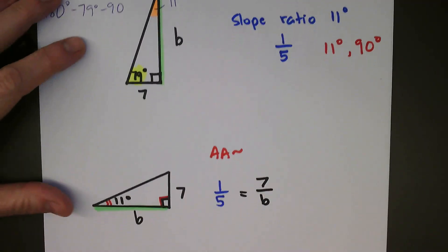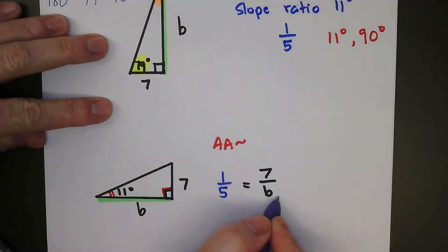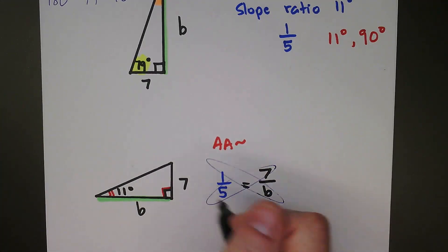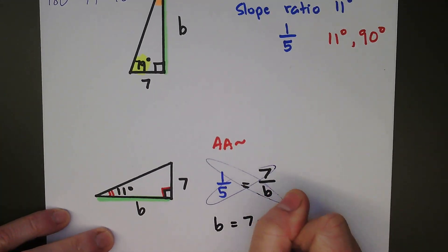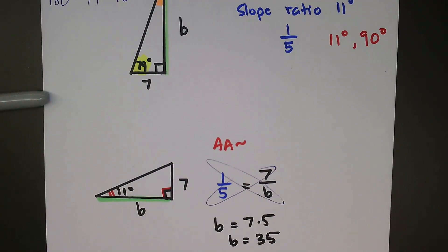So then from here, I can solve with cross products. This is B times 1, right, and 7 times 5, and cross products are always equal. So 1 times B is B, 7 times 5, well, that's 35. So that is my final answer. My final answer is 35.